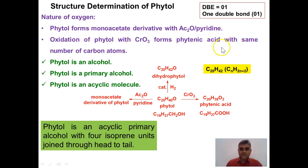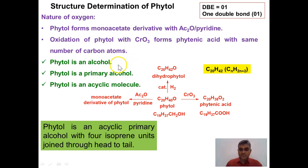Now let us find out the nature of the oxygen in phytol. We have already proved the presence of one double bond corresponding to one degree of unsaturation. When phytol is treated with acetic anhydride it forms a monoacetate derivative, clearly indicating that phytol is an alcohol. When phytol is subjected to oxidation with CrO3 it forms a carboxylic acid with the same number of carbon atoms, proving that phytol is a primary alcohol.